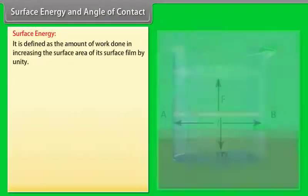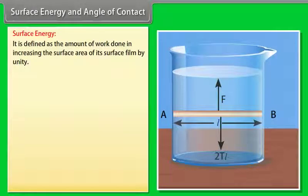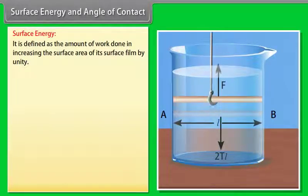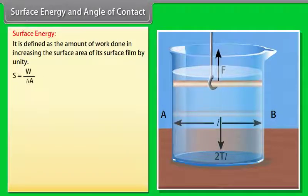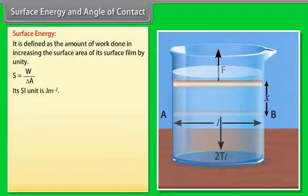Surface energy and angle of contact. Surface energy is defined as the amount of work done in increasing the surface area of its surface film by unity. Surface energy equals work done divided by increase in area. Its SI unit is joule per meter square.